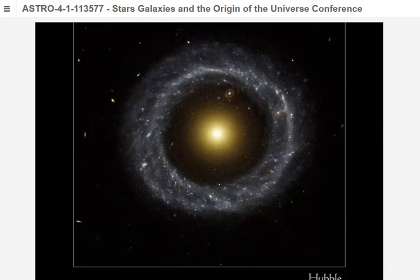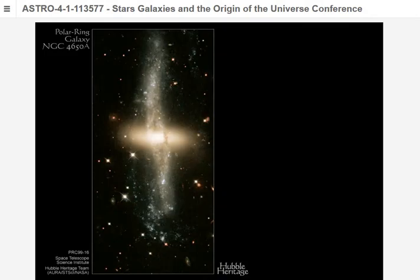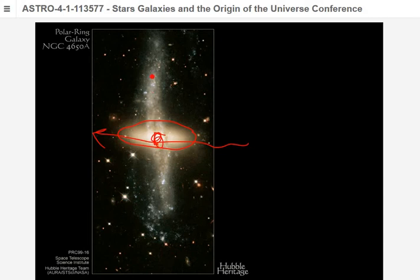Polar ring galaxy: the collision stretched the central bulge into a peanut shape. The collision came from a perpendicular direction — as the second galaxy passed, its gravity pulled material that was in circular orbits and drew it into a polar ring.